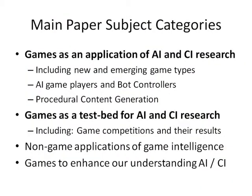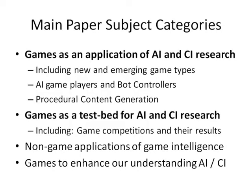The scope also includes non-game applications of game intelligence. Sometimes people use game theory and game AI to do things like develop a cell phone network. These sorts of papers are in the minority - the two bold categories account for probably 98% of papers we receive. The final category is games to enhance our understanding of AI and CI, and in fact many in the second category actually do that by using games as a testbed for AI.